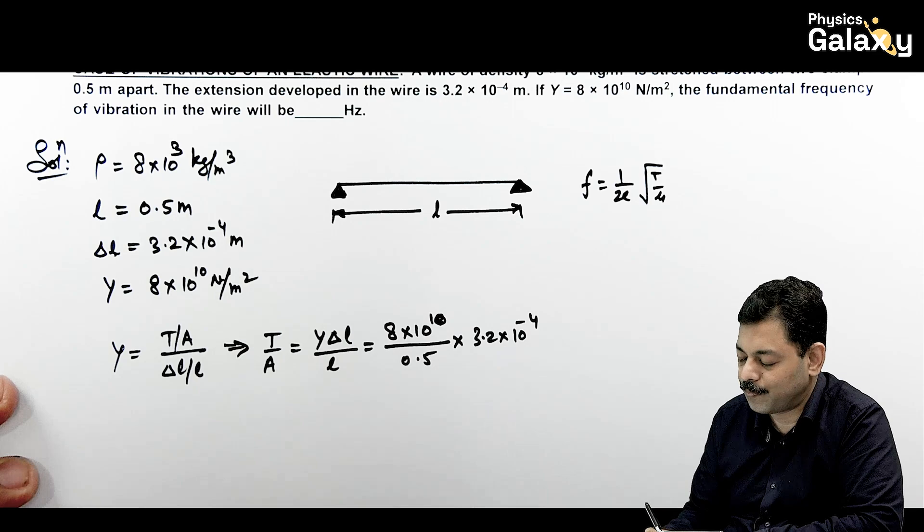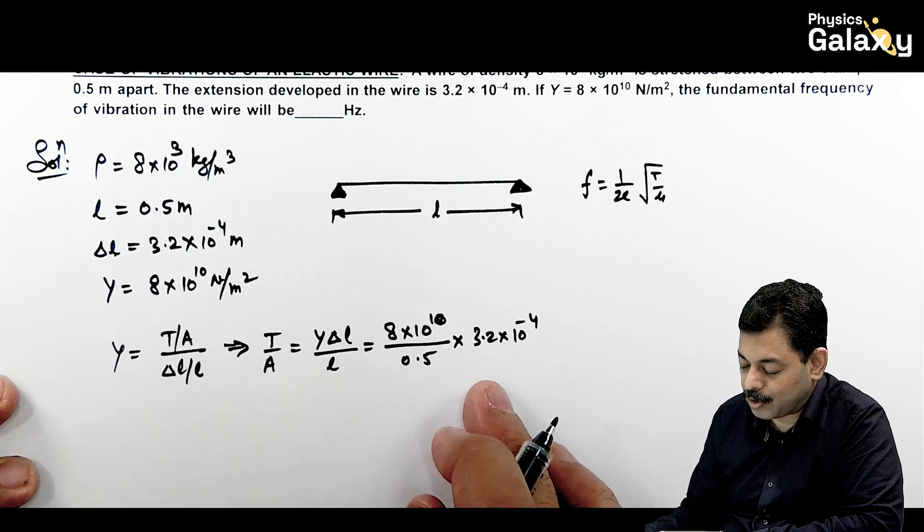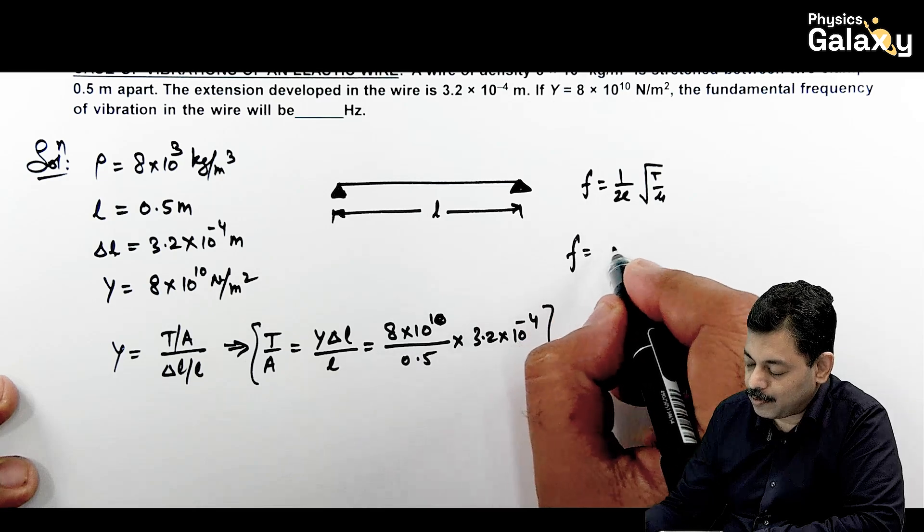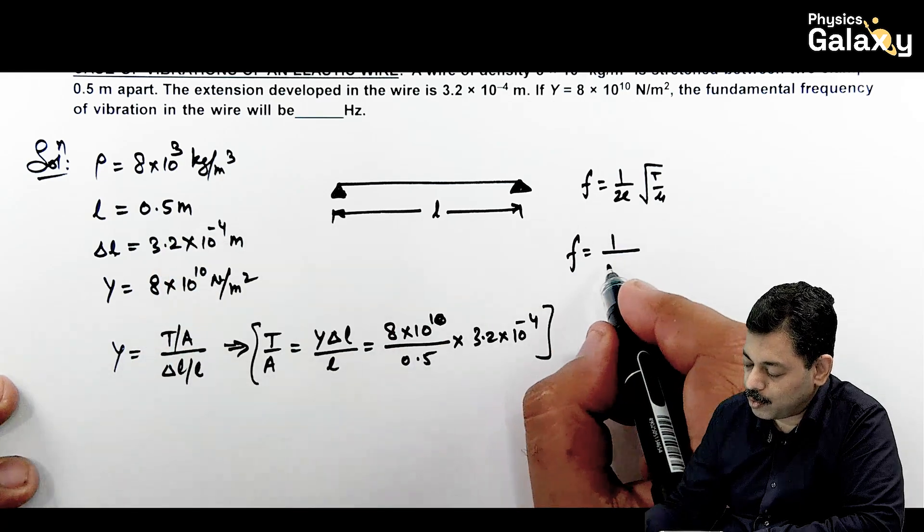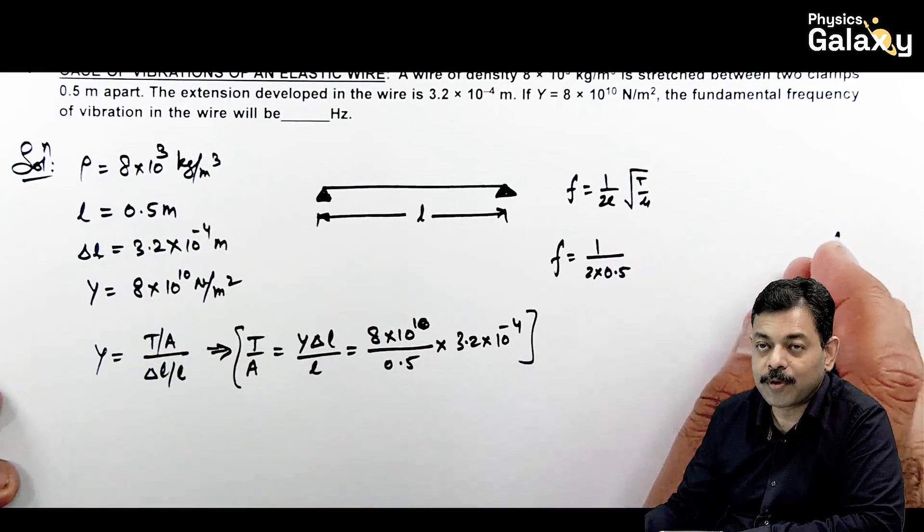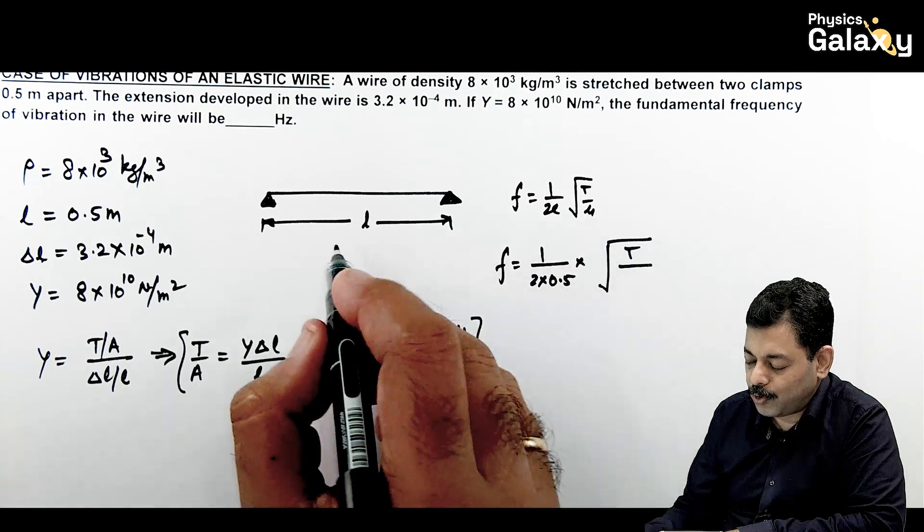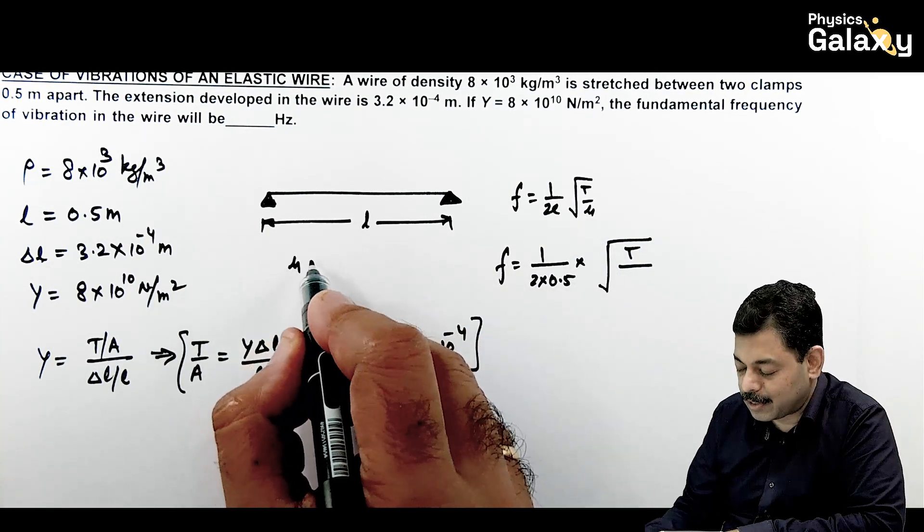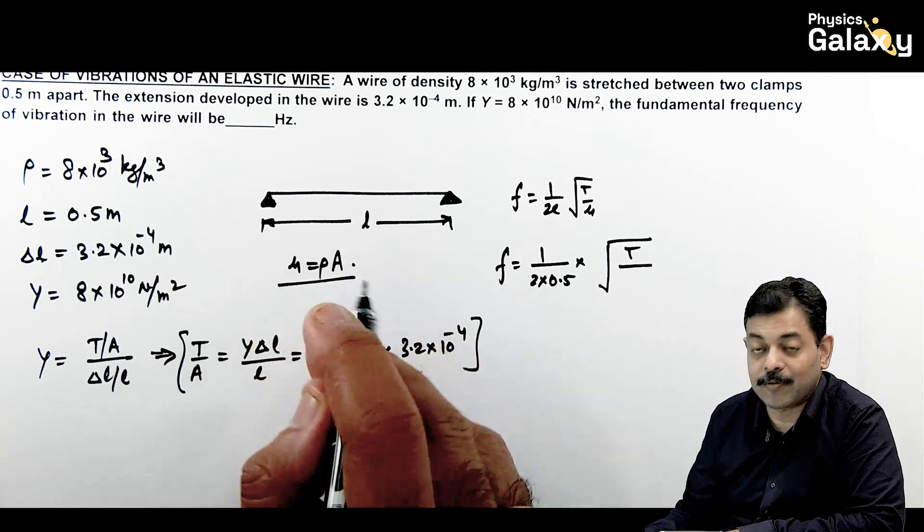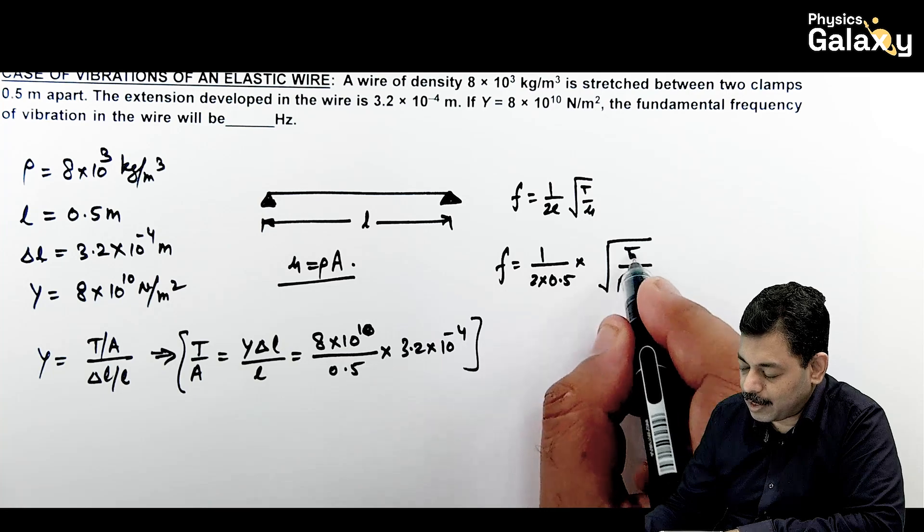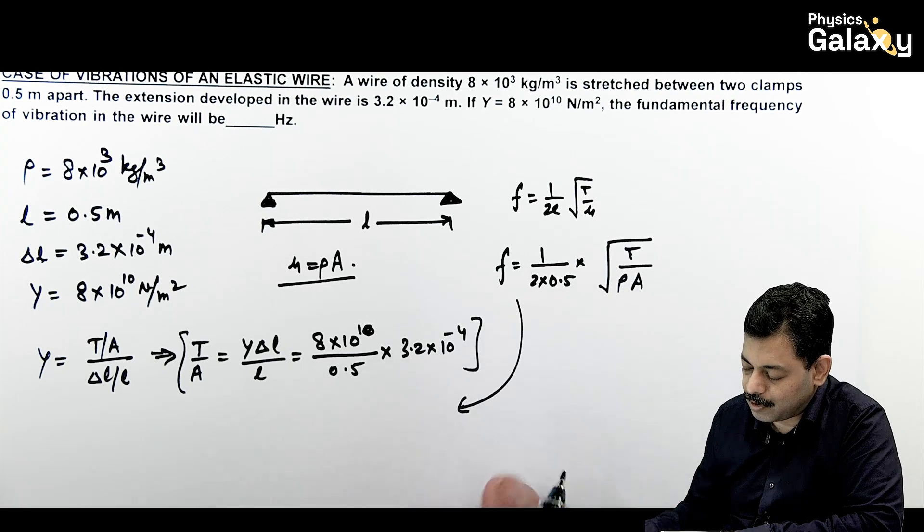This is what you are getting as stress value. Or, if you look at frequency, it is 1 by 2 into 0.5 multiplied by root of T upon mu. You know well the mass per unit length can be written as rho A. This is another relation we use for linear mass density. This is rho multiplied by T by A. If you put this value here, you'll see frequency, fundamental frequency ka value.